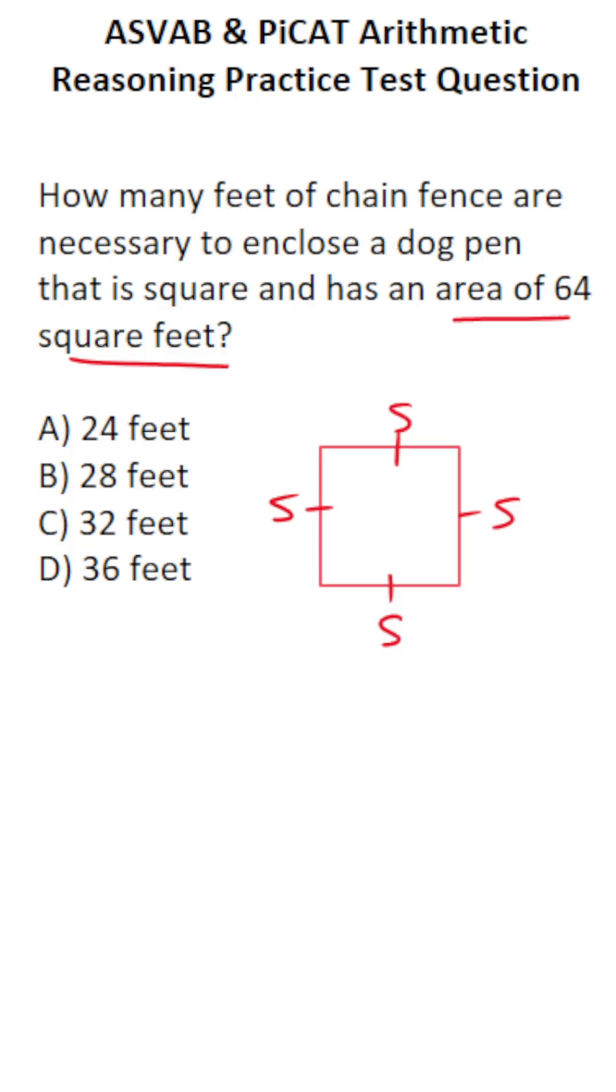When you add up all the sides of any polygon, including a regular polygon like a square, what you're doing is finding its perimeter.